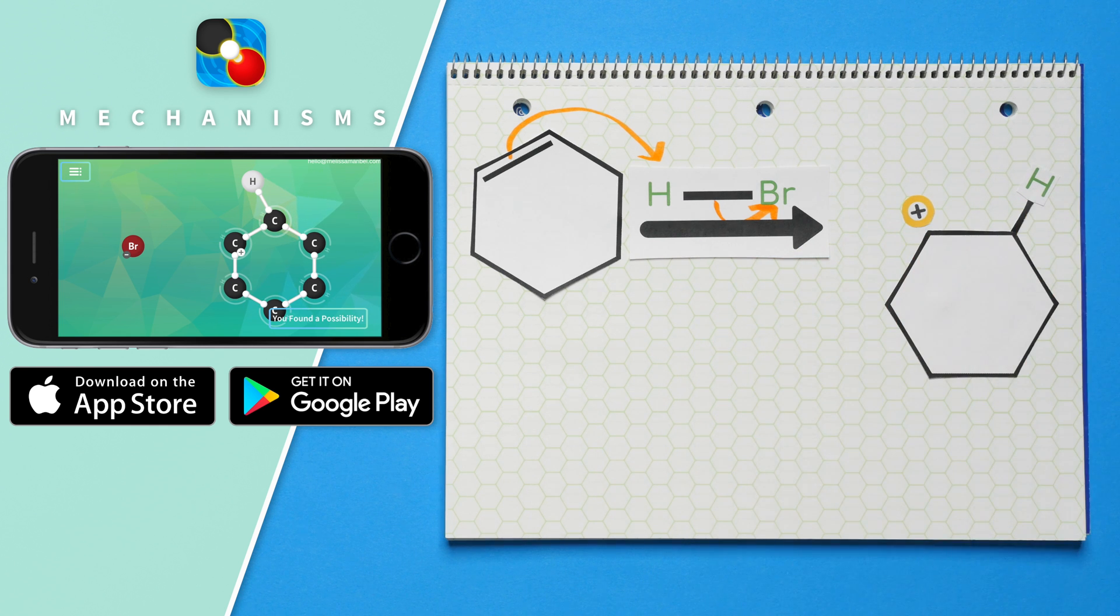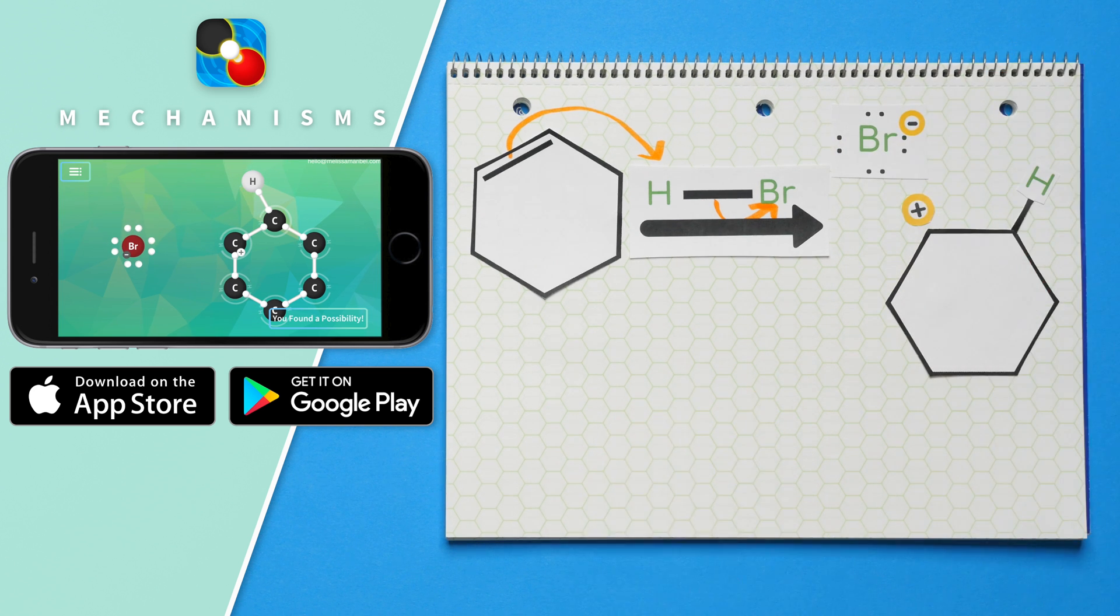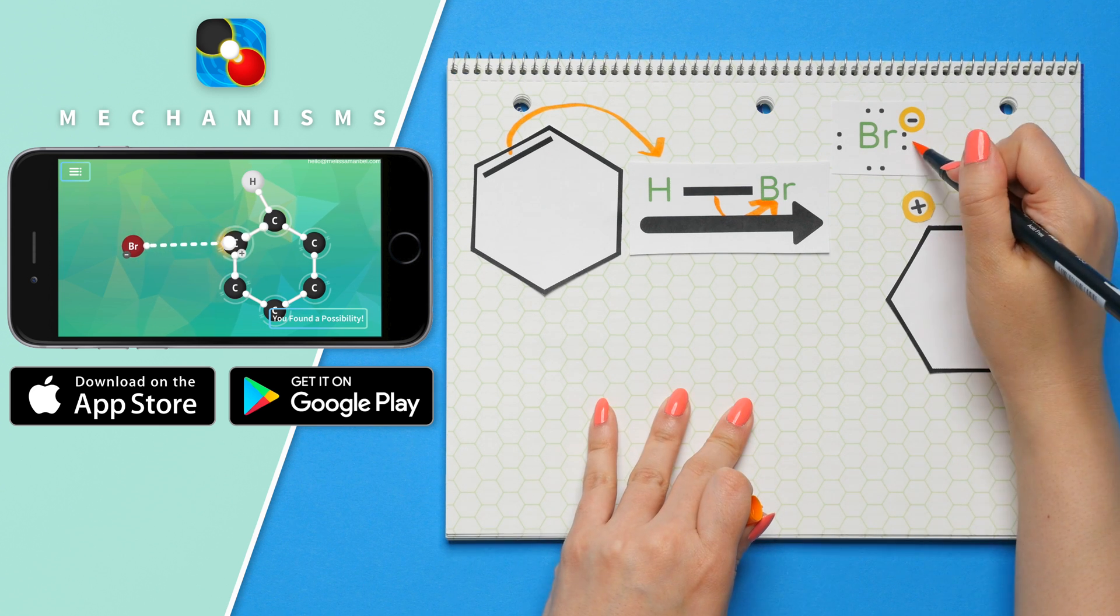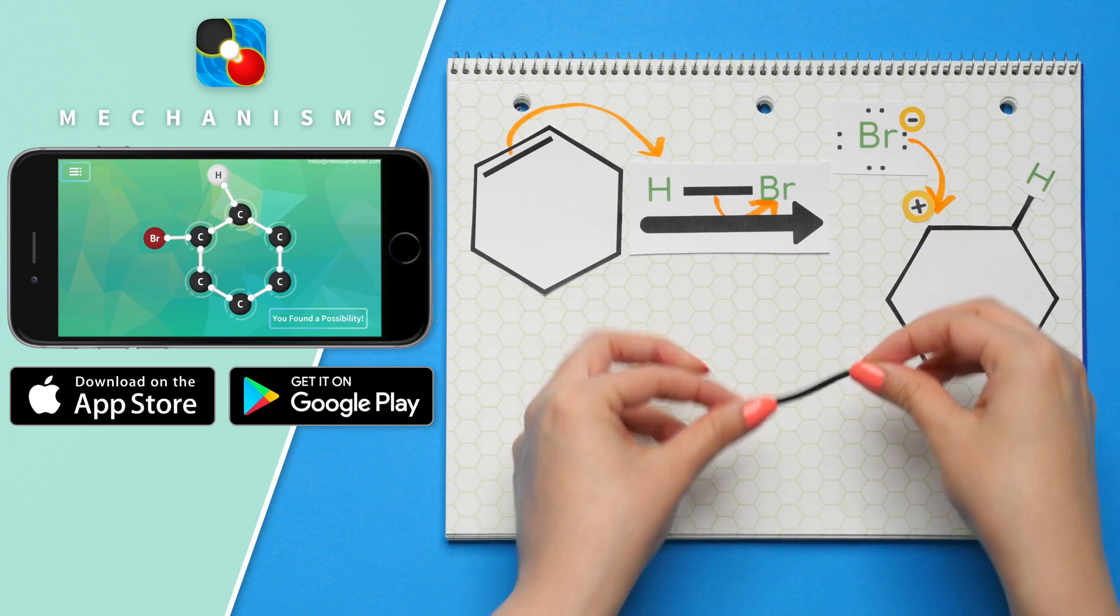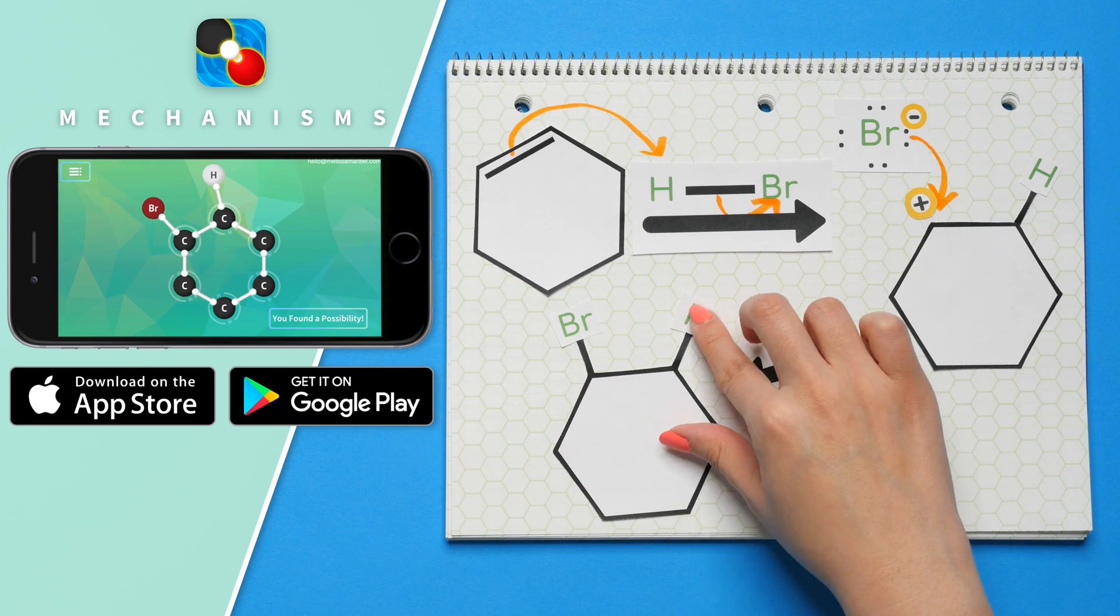Step two is a nucleophilic attack on the carbocation. Our bromine is now negatively charged and will act as our new nucleophile. The electrons from the bromine will attack the carbocation and form a new bond which results in our product for this reaction.